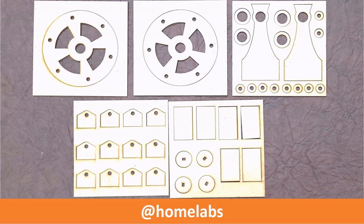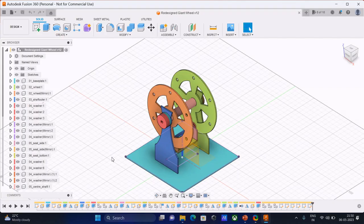The first step is to construct this model on Fusion 360. So here's the CAD model of the ferris wheel and this is how we constructed it.